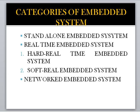Next comes the real-time embedded system. A real-time embedded system is one whose response time is critical — in other words, some particular work must be done in a specific time period. In addition to functional correctness, the time constraint must also be satisfied. There are two types: the first is the hard real-time embedded system, and the second is the soft real-time embedded system.